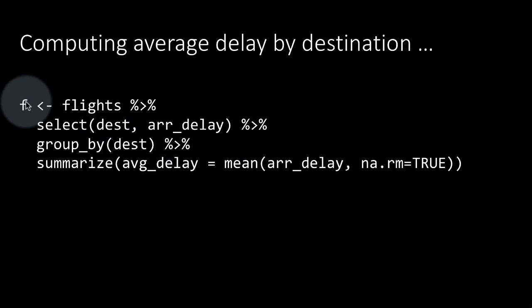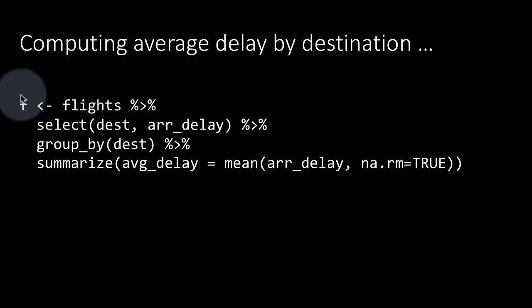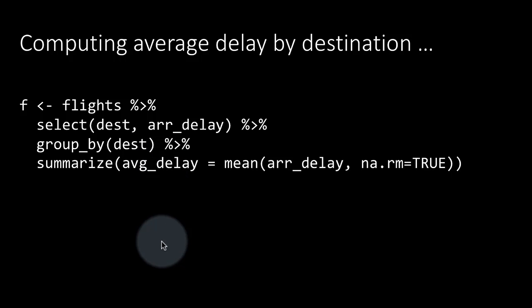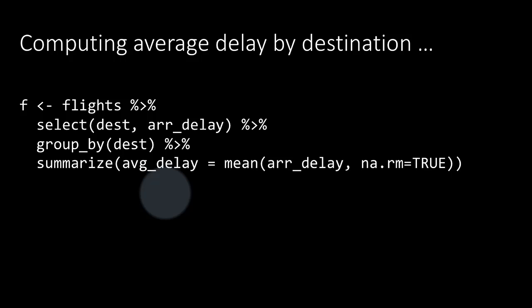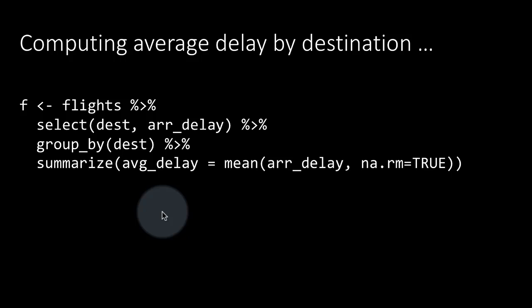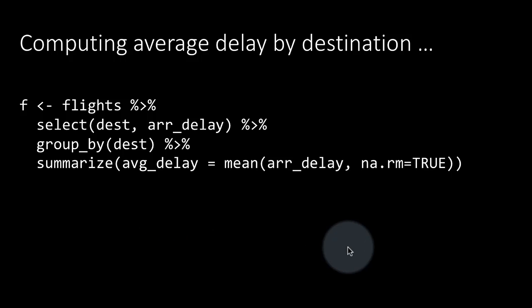The tibble f now contains the results of this operation. The reason we are storing this in a tibble f is because we are going to plot it. I could have gone ahead and plotted it directly, but I just want to split the discussion across two slides. That's the reason I created this temporary variable called f — I need not have done that.